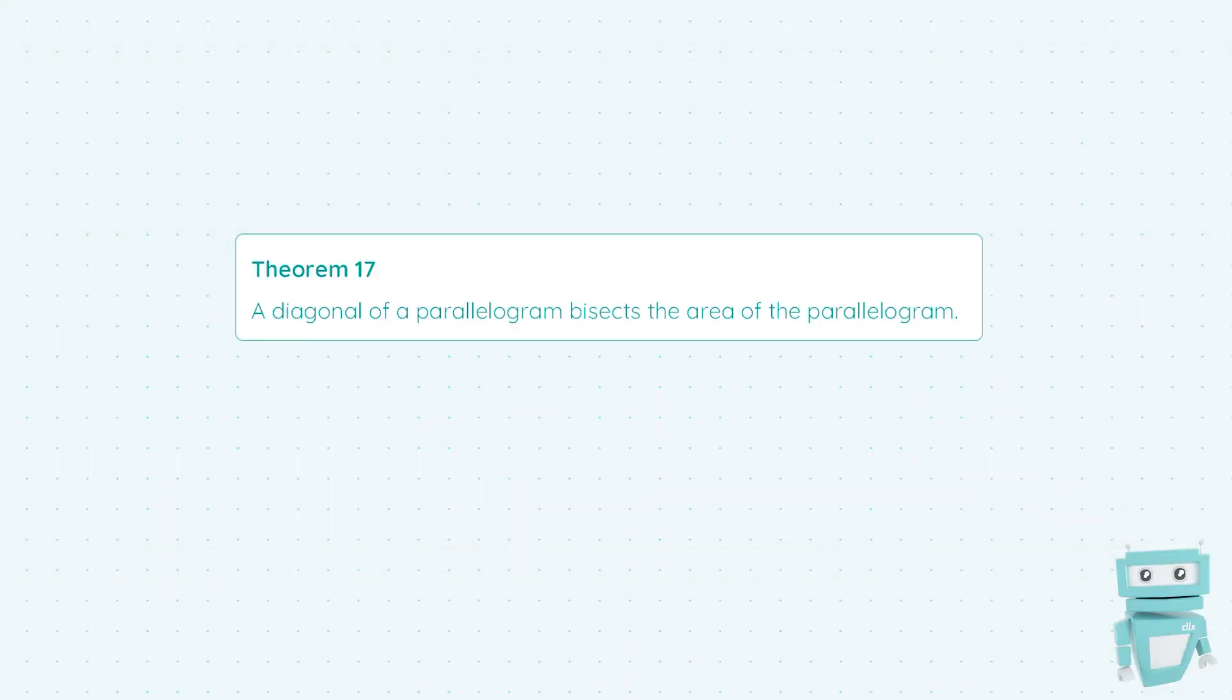Hi guys, Sean here from StudyClicks and in this video we're going to be taking a look at theorem 17 which states that a diagonal of a parallelogram bisects the area of the parallelogram.